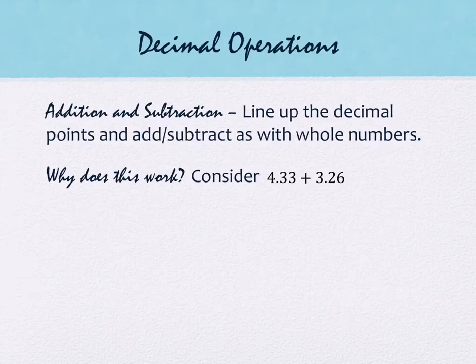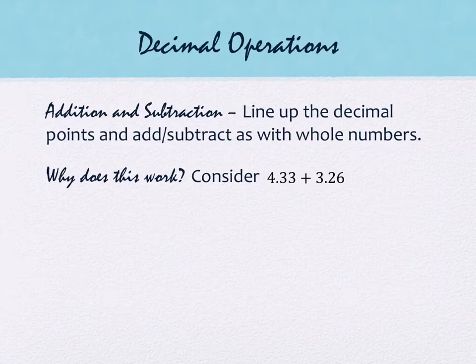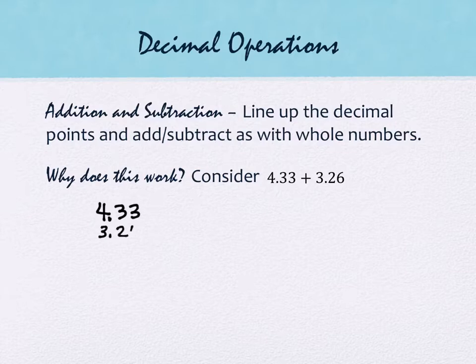We'll start with addition and subtraction. When working with addition and subtraction of decimals, it's a very convenient operation, unlike addition and subtraction with fractions. We line up the decimal points and then add and subtract the same way we do with whole numbers. If we're looking at 4.33 and 3.26, we do it by lining up the decimal points, and then I'll address why this works.